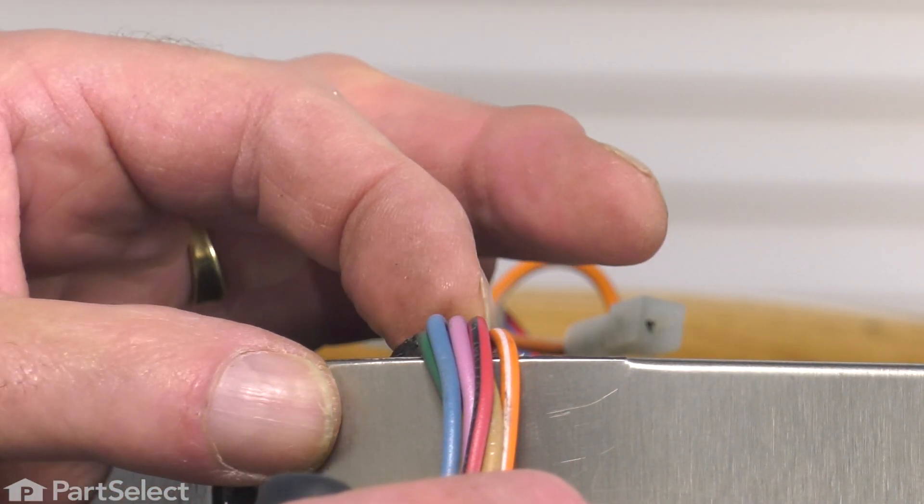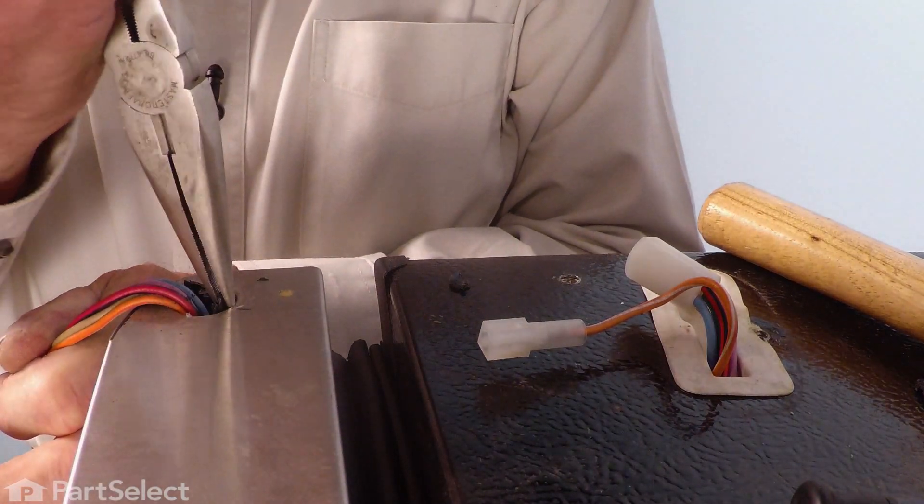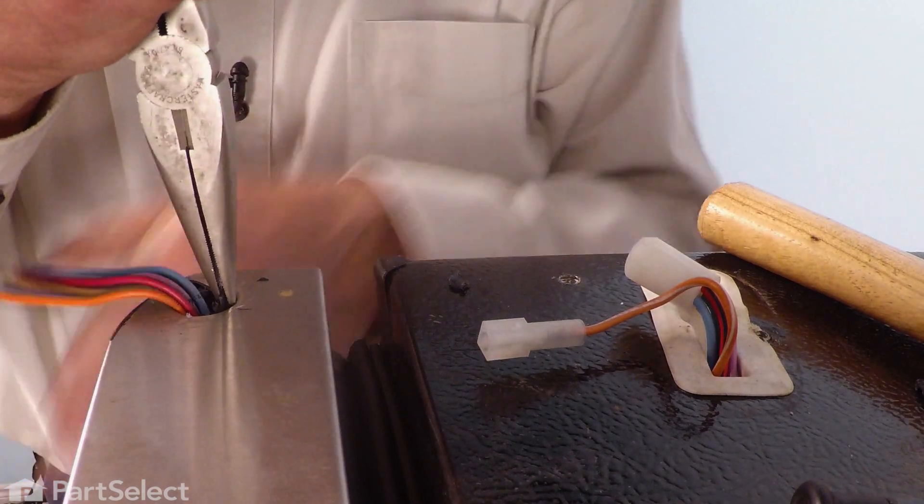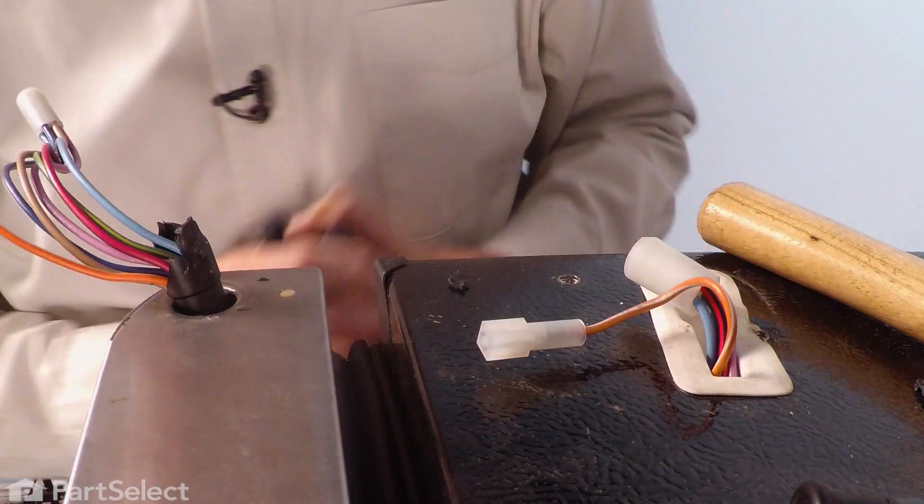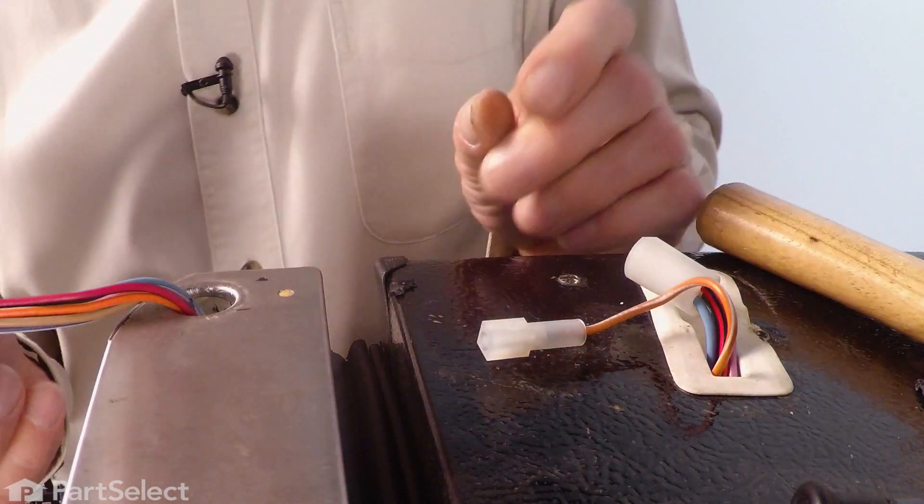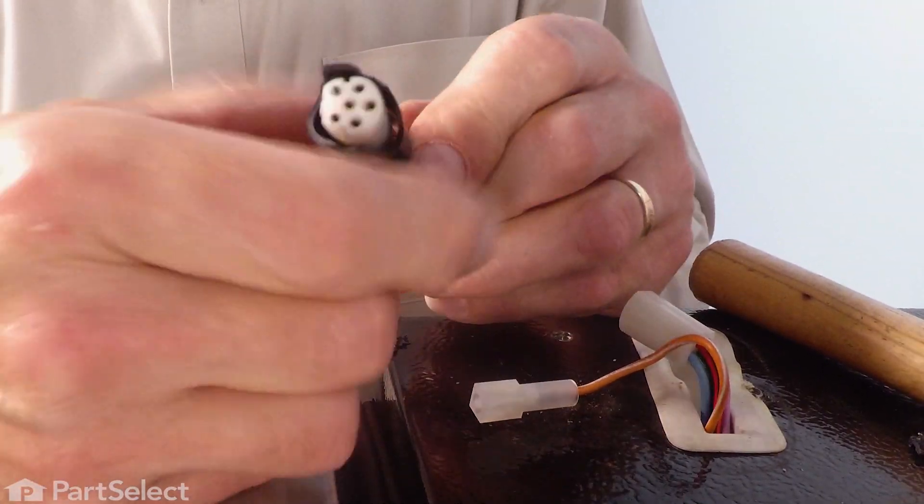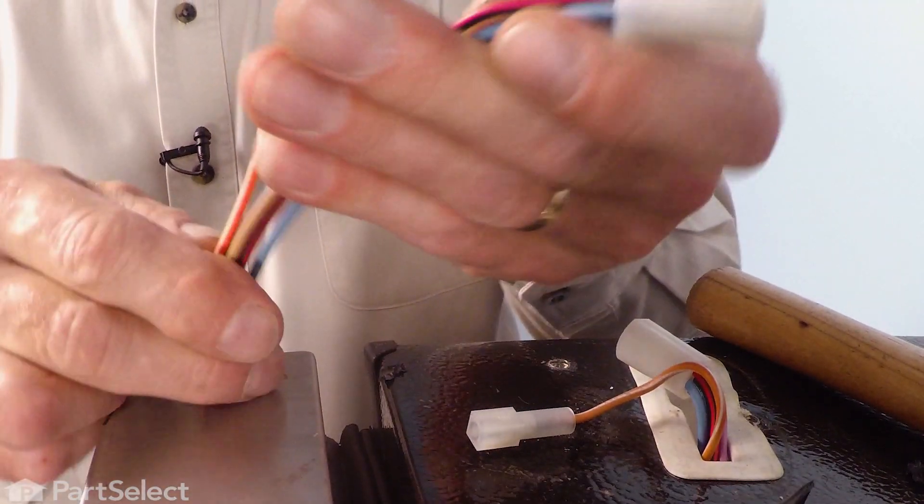You may find that bushing is so brittle that it breaks apart in pieces, but just keep chipping away at it, being cautious with the wiring that we don't damage it, until we can get it pulled completely up out of that opening. Then slide it over that harness connector.